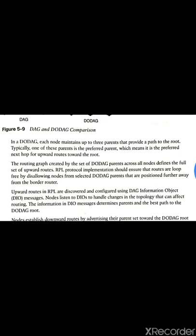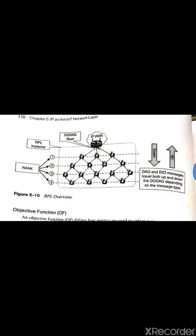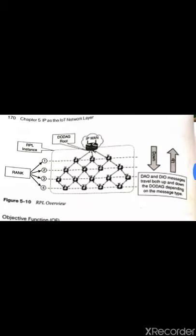They usually run on top, as you can see here in the overview. This is the figure of RPL overview. You have RPL instance, rank, IPv6, and you have down and up.